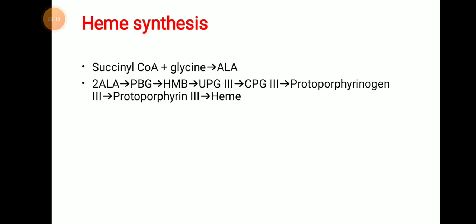Hi friends. In the previous two videos we discussed about synthesis of heme. Today we will move to regulation of heme synthesis. Heme is nothing but ferrous ion incorporated into protoporphyrin 9. This protoporphyrin 9 is also known as protoporphyrin 3 — different scientists named it differently. So if you see protoporphyrin 9 as protoporphyrin 3 in some textbooks, it is also true.